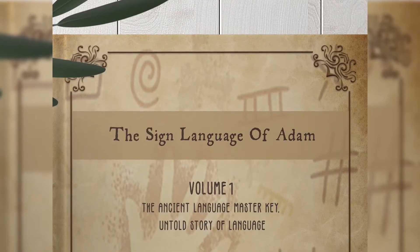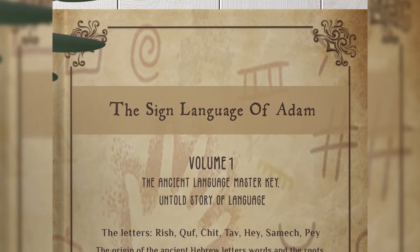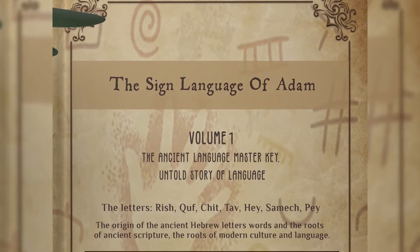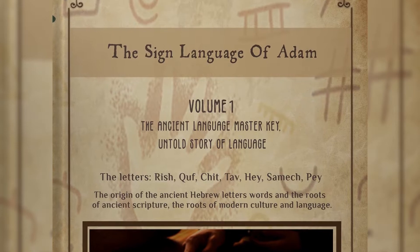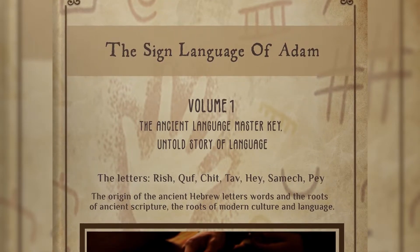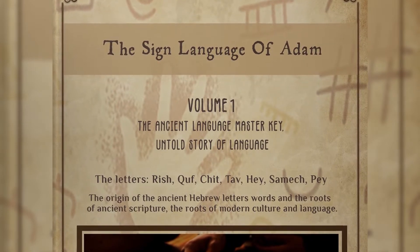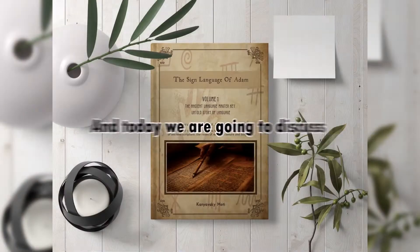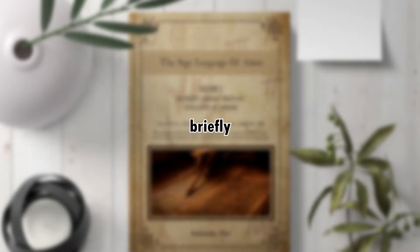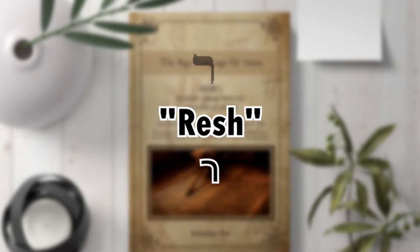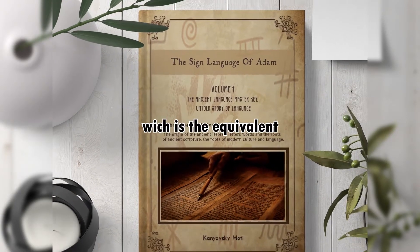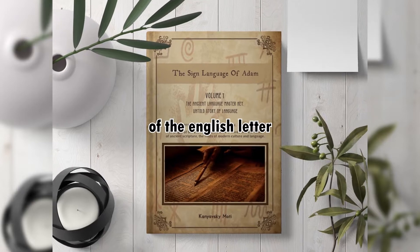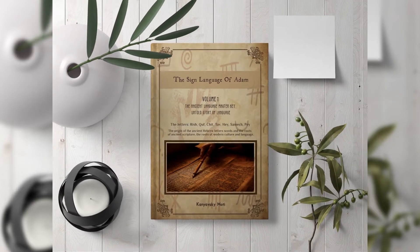The Signs Language of Adam, Volume 1, Book 1: The Ancient Language Master Key — Untold Story of Language. Today we're going to discuss briefly the letter Resh, which is the equivalent of the English letter R.